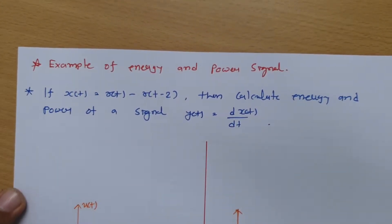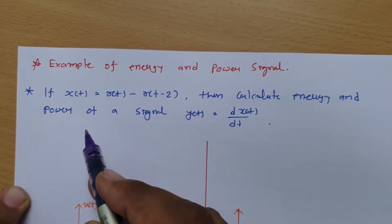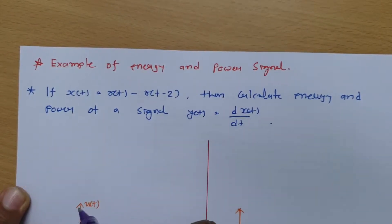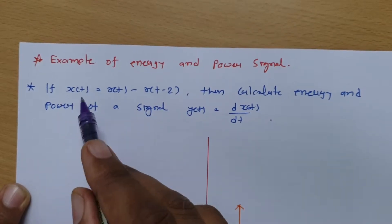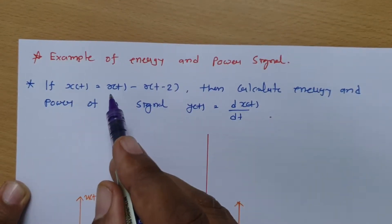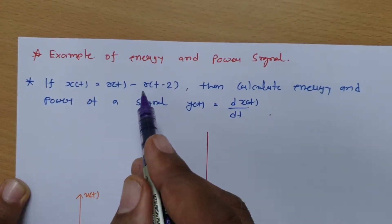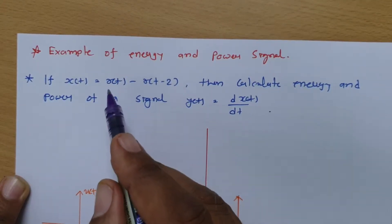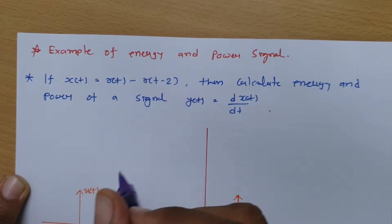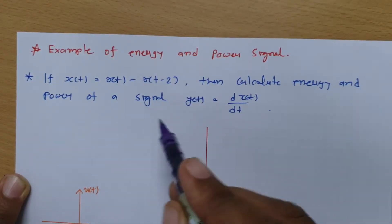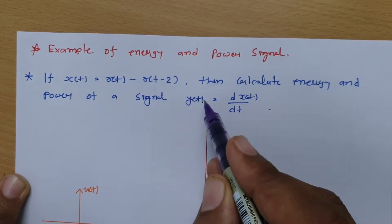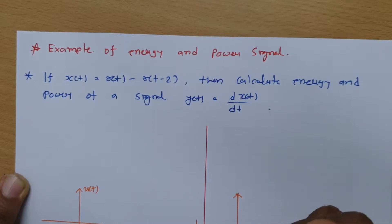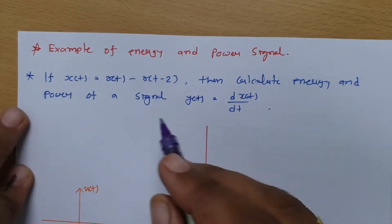Welcome to the Signal and Systems lecture series. In this session, I will explain an example of energy and power signals. The signal X(t) is given by r(t) minus r(t-2), where r(t) is the ramp signal. The question is to calculate the energy and power of Y(t), where Y(t) is the differentiation of X(t) with respect to time.